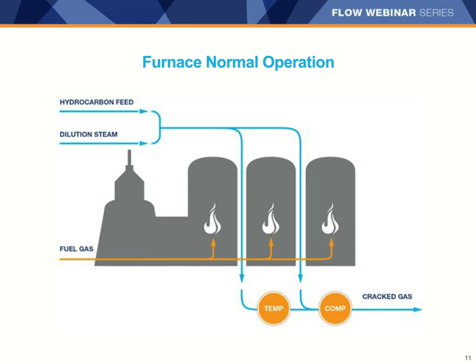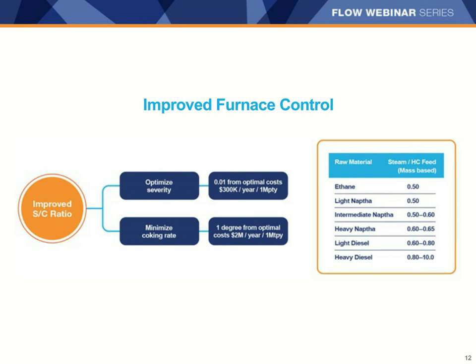In order to do this, the steam to hydrocarbon ratio must be very carefully controlled. Steam is added to reduce the temperature for the cracking and to help prevent rapid coking. However, if there's too much steam, it lowers the energy efficiency and the productivity. When there's too much steam, it also requires excess quench reagent, diminishes the amount of hydrocarbon that can be carried through the pipelines, and leads to higher velocities and more pressure loss. Every hydrocarbon feed has an ideal steam to hydrocarbon ratio, and being off from the optimal ratio by as little as 0.01 can cost $300,000 a year in lost yield for every million tons per year capacity.